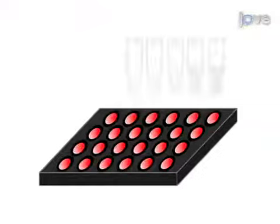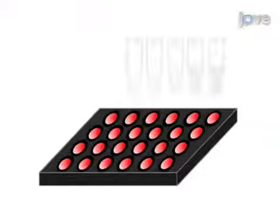In the second step, equal numbers of cells are seeded into individual wells of a multi-well plate. Next, the cells are treated with a compound of interest over a range of concentrations.